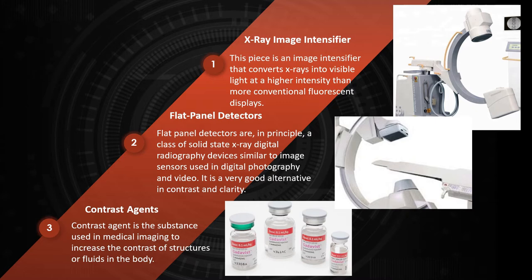First, I want to start with what can be called the main part: x-ray image intensifiers. This is an image intensifier that converts x-rays into visible light at a higher intensity than more conventional fluorescent displays. The implementation of x-ray image intensifiers allows the image on the screen to be visible under normal light conditions, as well as providing the option of recording the image with a conventional camera.